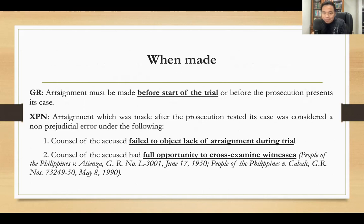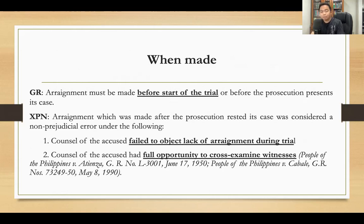For example, after arrest of the accused or upon his voluntary surrender, the court will set the case for arraignment, and this arraignment must be made before the trial — in fact, it is also before the pre-trial. Under the Rules on Criminal Procedure, arraignment is set on a separate date before pre-trial, but because of the rules on continuous trial, arraignment is now simultaneously conducted with pre-trial, so in one hearing both arraignment and pre-trial are conducted.